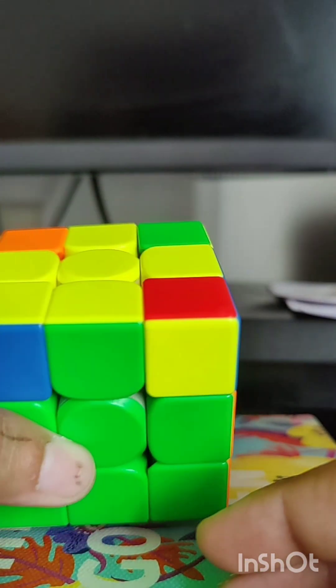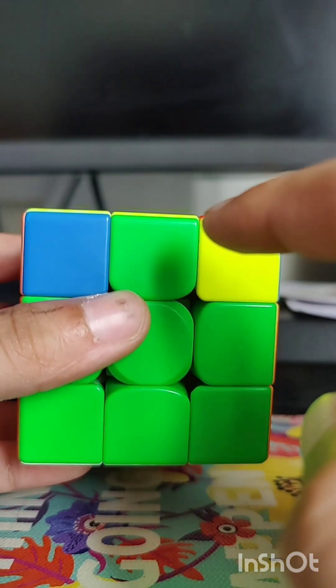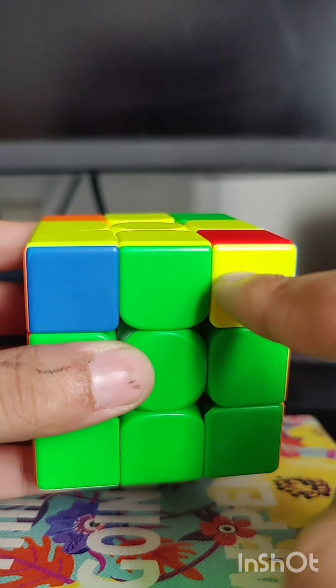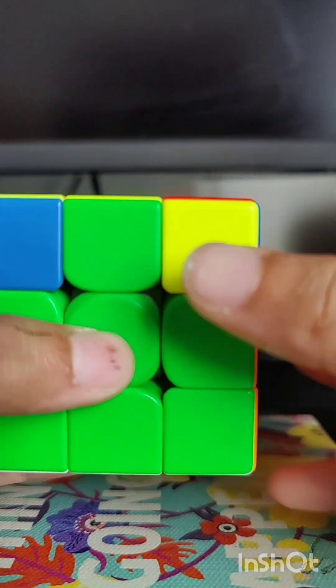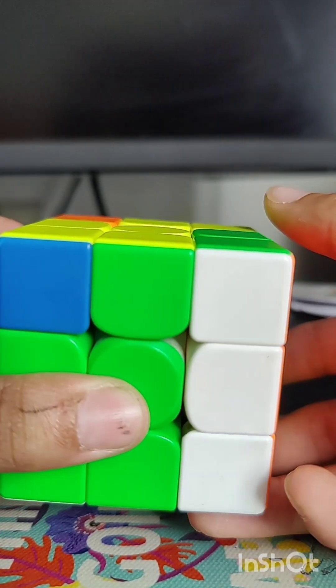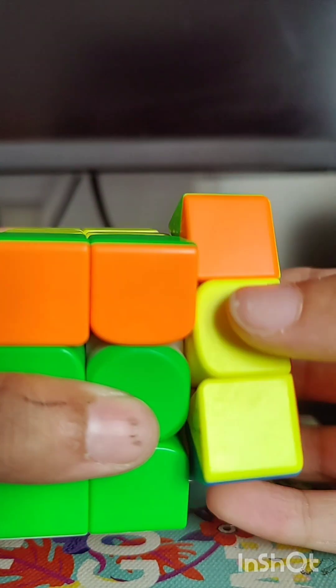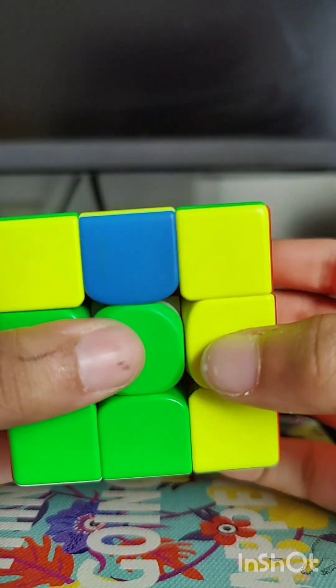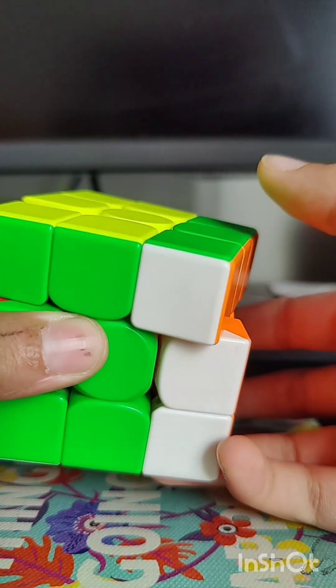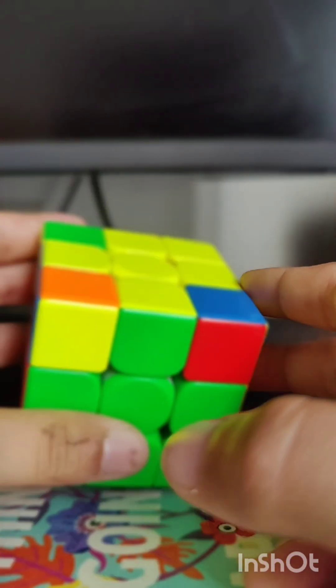The algorithm we have is called the Sune, where we have a fish like this and a corner in front. Remember if the corner is facing outwards, we'll come to that later. So first we have to do R, bring this pair here, bring the pair in the back, and we just insert the pair.